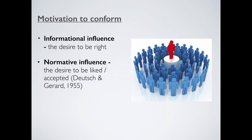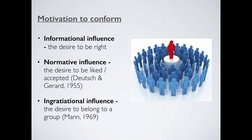Secondly, it could be down to normative influence — the desire to be liked or accepted. This is when a person is not in doubt and knows exactly what the right thing to do is, but they're influenced by social norms. The pressure comes from the group itself based on a need to be liked and accepted by it. We can also add a third one called ingratiational influence — the desire to belong to a group. Humans by and large don't like to be alone; we like to be part of something bigger than ourselves, so solitary behaviour is very much the exception. Man in the 1960s also adds ingratiational influence along with his motivations to conform.